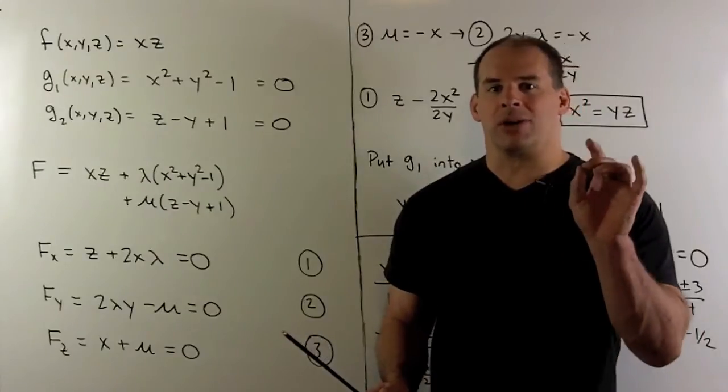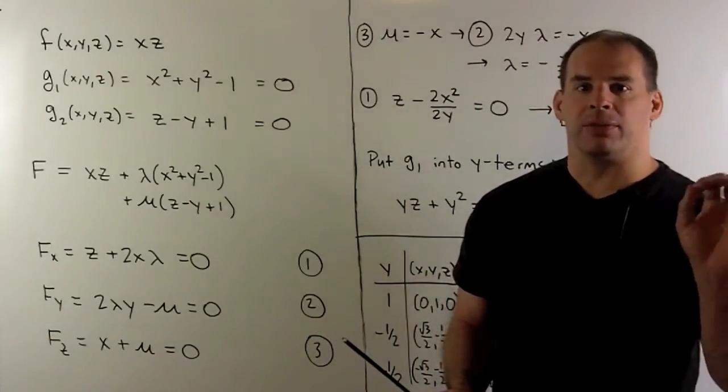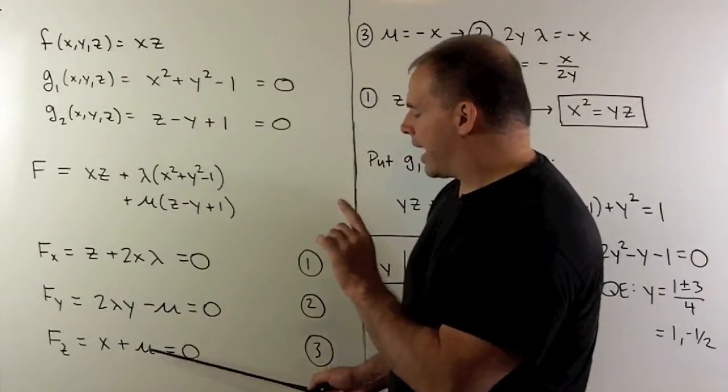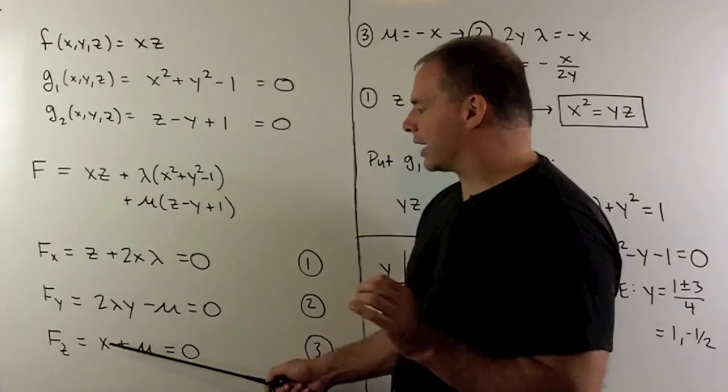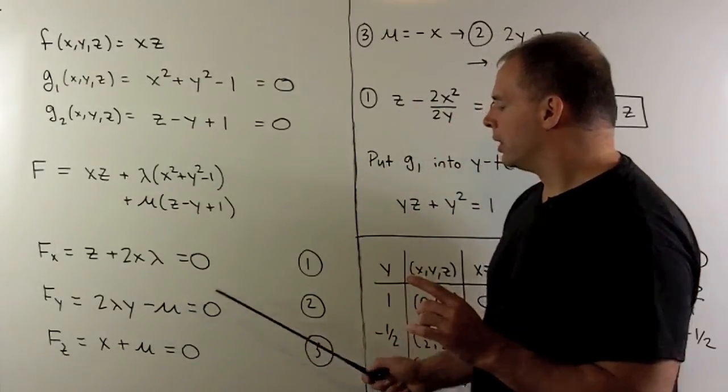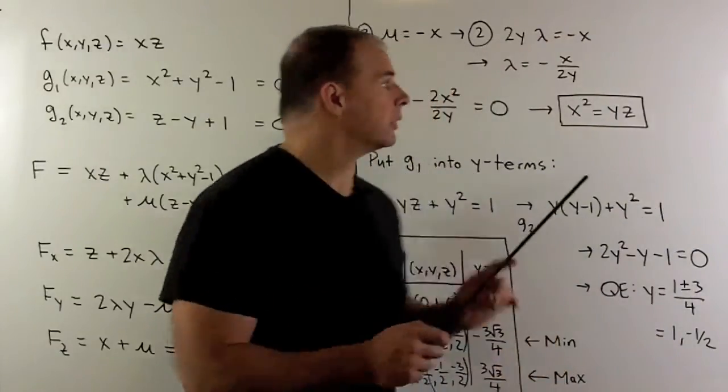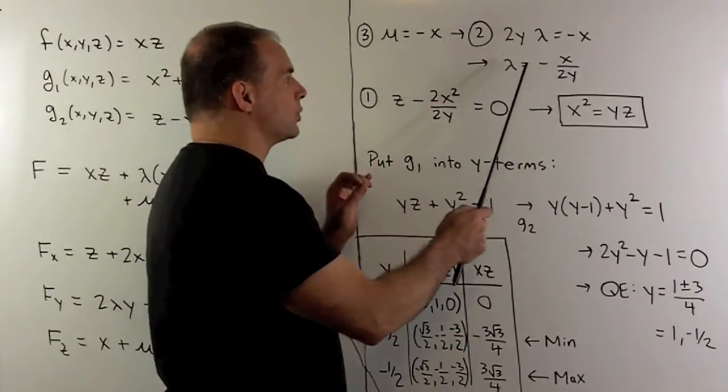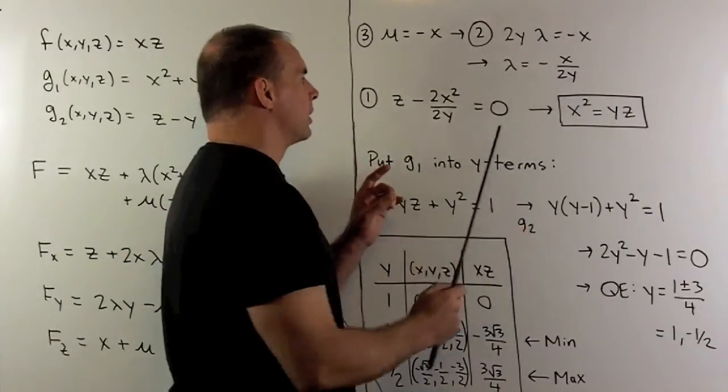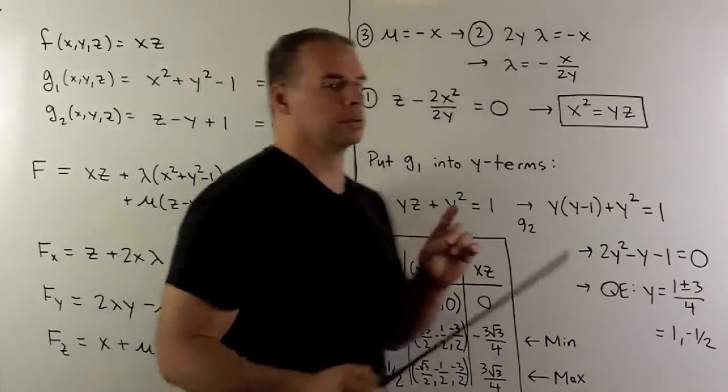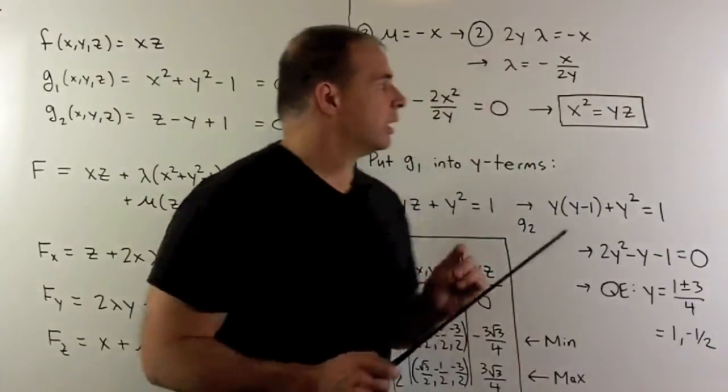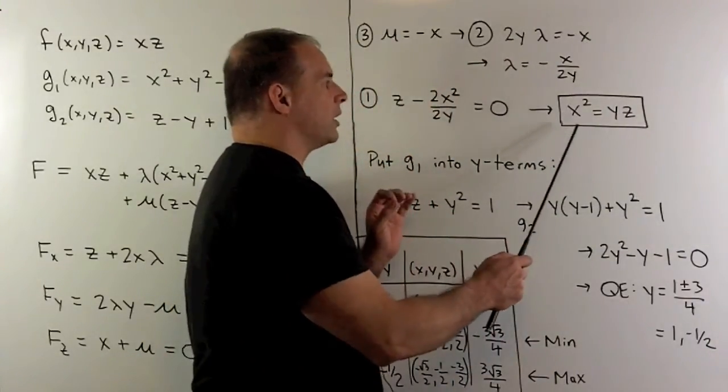Now we want to start by trying to eliminate mu and lambda from the equations. From equation three, mu is equal to -x, then I can substitute mu into equation two. That's going to give us lambda equals -x over 2y. Now I can work on getting rid of lambda by substituting into equation 1. From there, that's going to give me that x² is equal to yz.